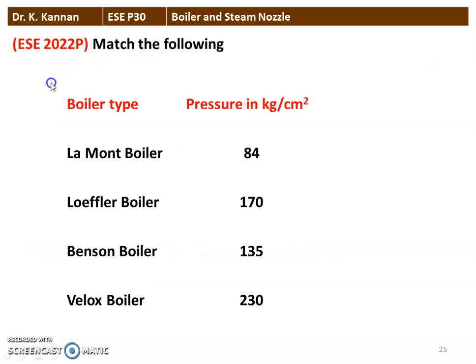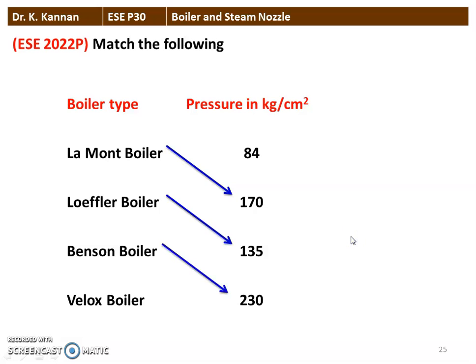Next question from the 2022 question paper: match the following four types of high pressure boiler with their operating pressures in kgf/cm². Lamont boiler: 170 kgf/cm². Loeffler boiler: 135 kgf/cm². Benson boiler: 230 kgf/cm². Velox boiler: 84 kgf/cm².